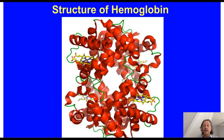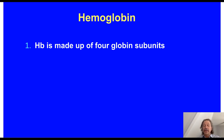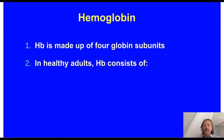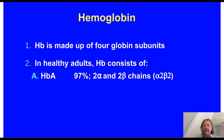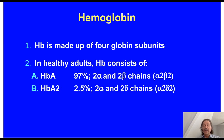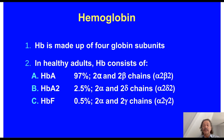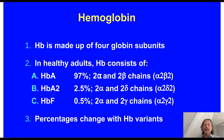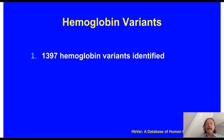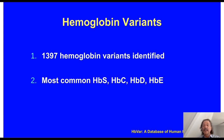With that background in mind, let's briefly discuss hemoglobin. It is made up of four globin subunits. In healthy adults, hemoglobin consists predominantly — 97% — of hemoglobin A, which has two alpha and two beta chains. Hemoglobin A2 is about 2.5%, and hemoglobin F or fetal hemoglobin is 0.5%. A2 and F have delta and gamma chains respectively. These percentages change in the presence of a hemoglobin variant. To date, 1,397 hemoglobin variants have been identified, but the most common are hemoglobin S, C, D, and E.